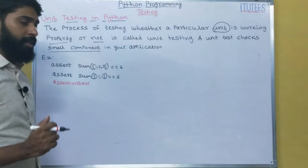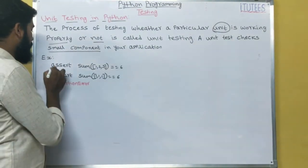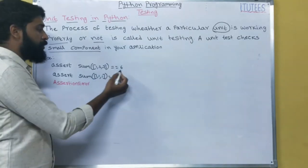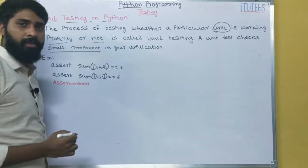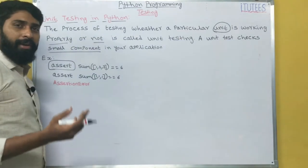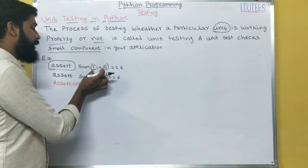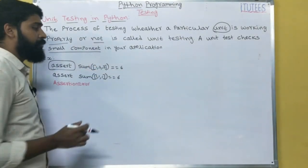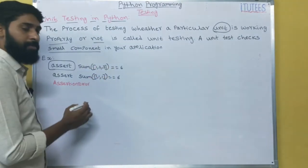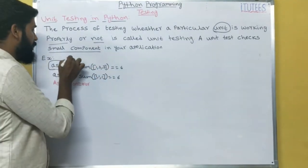Now we can discuss with one example. For example, assert sum of list [1, 2, 3] equals to 6. Assert is nothing but an assumption. You are writing a program, and your assumption is that the sum of 1, 2, 3 is 6. So how you can check that — by using the assert keyword.